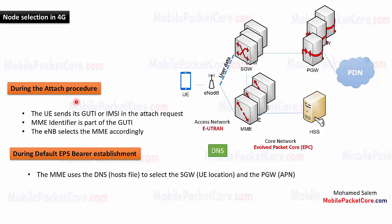First, during the attach procedure, the UE sends an attach request message to the eNB in order to attach to the network. This attach request message contains the identifier of this UE. This identifier may be the GUTI of the UE, or if the GUTI is not available, it will be the IMSI of the UE. So if the UE sends its GUTI to the eNB as its identifier, the eNB will be able to extract the MME identifier that was serving this UE during the last session. This is because this identifier is part of the GUTI that is provided from the UE.